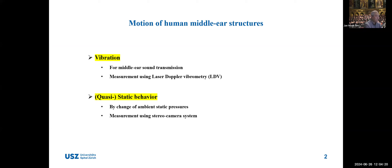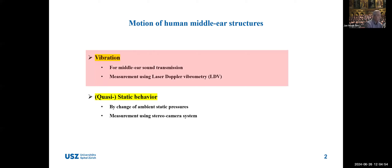The first is vibration during middle ear sound transmission for hearing perception, which we usually measure using the laser Doppler vibrometer. The second type of behavior is static behavior under change of ambient static pressures, which we measure using a stereo camera system. I would like to start from the vibrational motion of the middle ear structures and the measurement using the laser Doppler vibrometer.